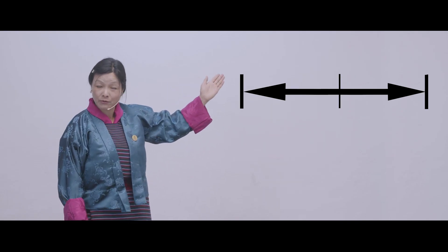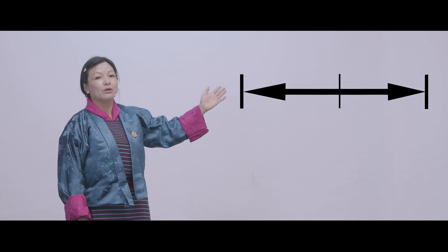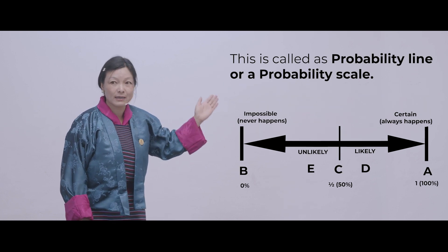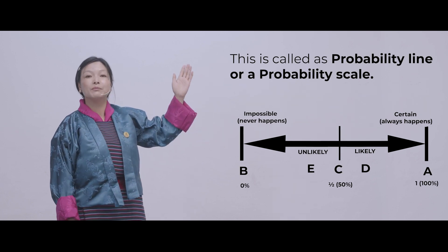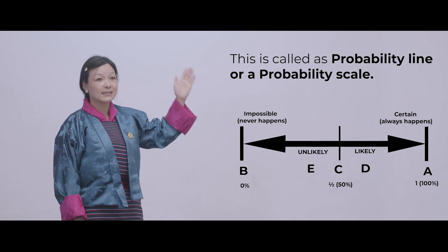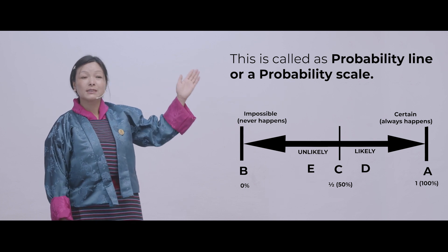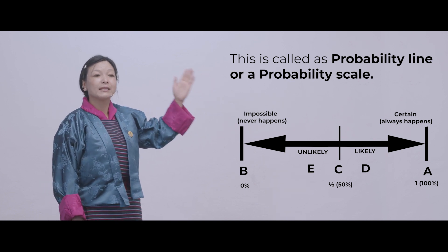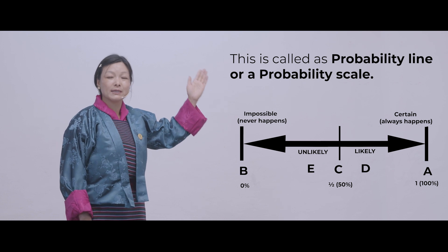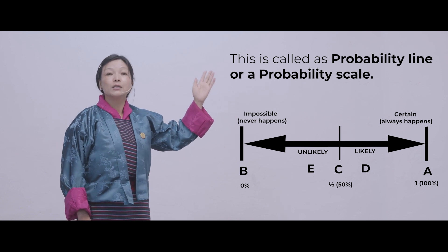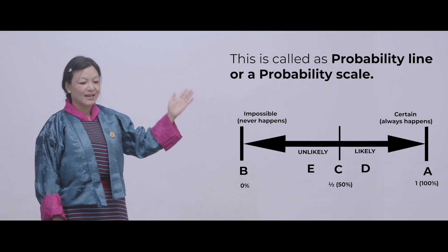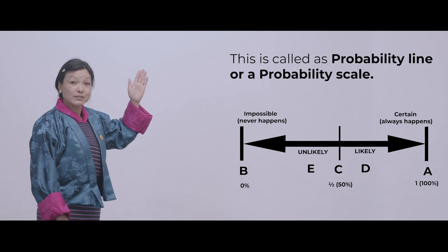Can you all look here? What is this? Have you seen it before? This is called the probability line or probability scale. We use this scale to place an event in the correct place and to use the correct probability names or terms.